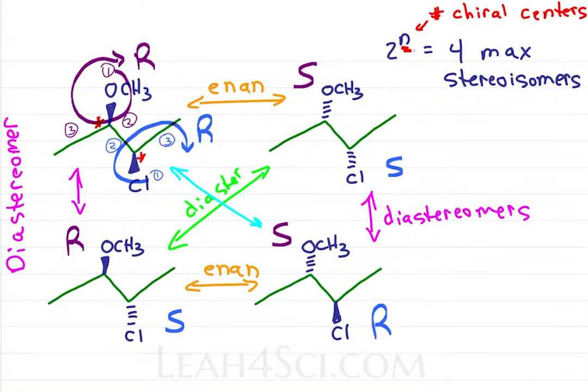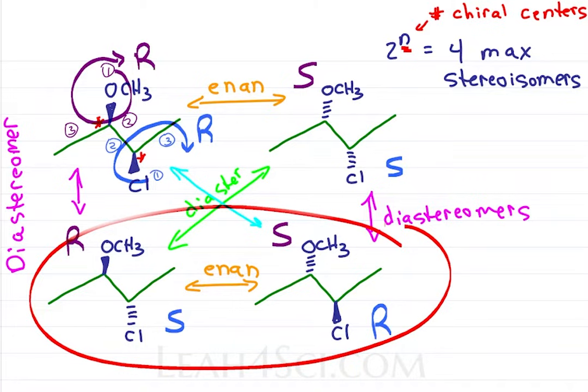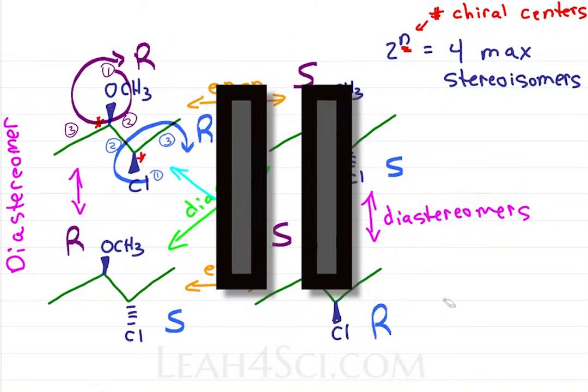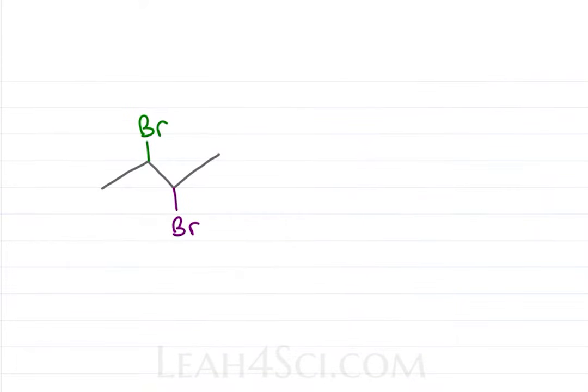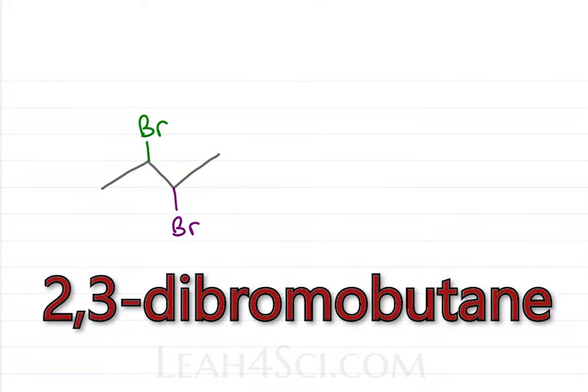This became so messy so let's summarize. If you have two chiral centers for a maximum of four potential stereoisomers, every molecule will tend to have one enantiomer and two diastereomers. Pause this video if you need a minute for it to sink in and let's continue.